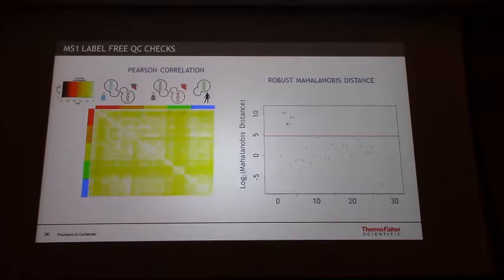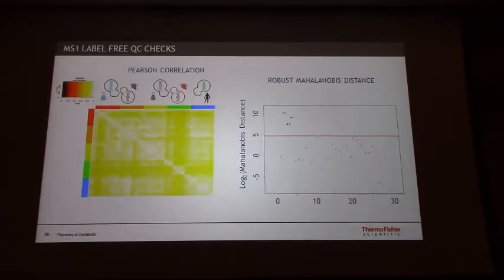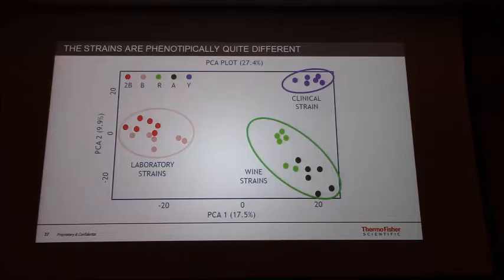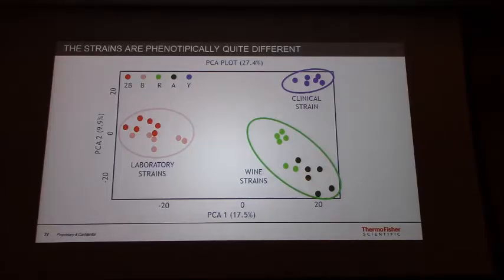We have some outliers — there is one strain that is a little bit different from the others. I also did a robust Mahalanobis distance test to see if I could identify random outliers within the sample hub. I found three, and they were all from the 2B samples. I actually didn't remove them because I don't think it's going to matter for the final analysis. When we do a PCA analysis, we are able to completely separate the five strains. The laboratory strains cluster very well together; the wine strains are also clustered well together; and the clinical strain is completely different from the others.